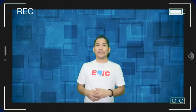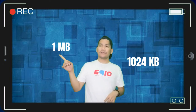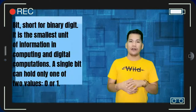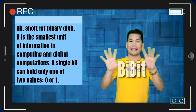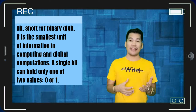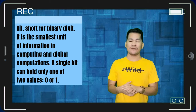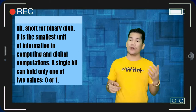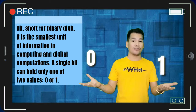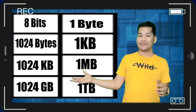But how do I know what unit of measurement is bigger than the other? That is easy, that is why I'm here to help. To highlight this content, allow me to discuss this and listen carefully. Bit, short for binary digit, is the smallest unit of information in computing and digital computations. A single bit can only hold one of two values: either zero or one. If there's more, take a look at this formula.